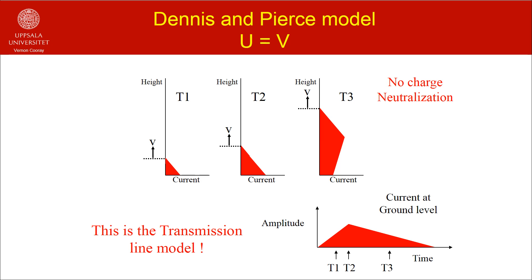Now let us consider the case where the current speed is the same as the front speed. In this case, the current travels without any hindrance along the return stroke channel — that is, it will travel along the channel without any attenuation or chopping. However, as in the case of the water jet, no charges will be deposited along the return stroke channel. The current will travel without any distortion from ground to cloud. As you will see in a moment, this indeed is the transmission line model of the return stroke introduced by Eumann and McLean in 1969.